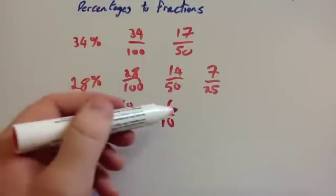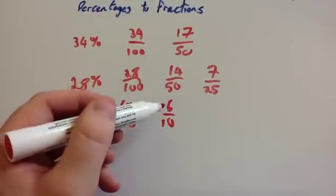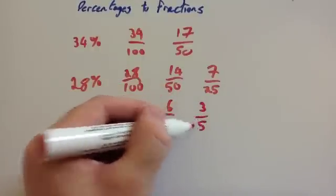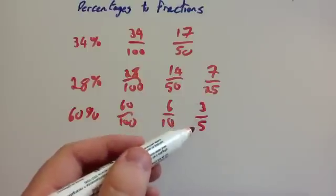Now, I'm not finished yet, because you can actually divide these both by 2. So half of 6 is 3, and half of 10 is 5. As you see, then your answer is 3 fifths.